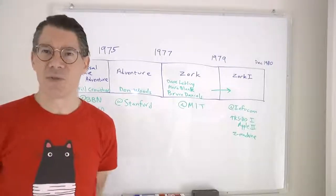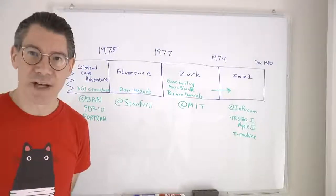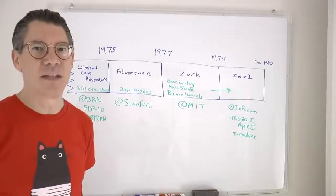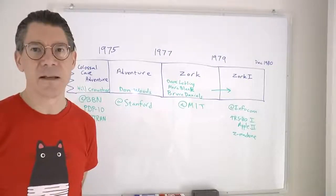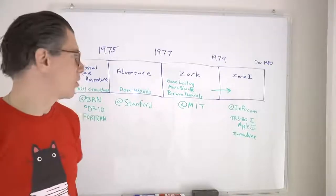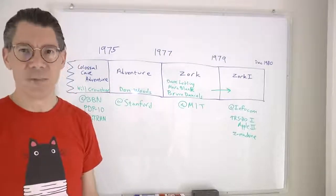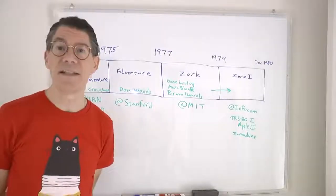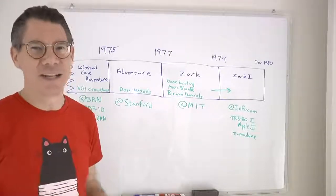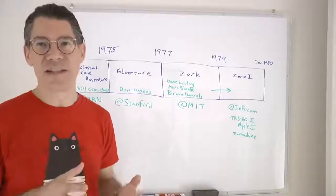It ran on a PDP-10, which was a mini-computer of that time, and it was written in Fortran. It was essentially complete in 1975, and at that point it made its way to Stanford University, where it caught the attention of Don Woods, who decided to dig into the program and add some more fantasy elements. He just called it Adventure, completed it in 1977, and then released the game and its source code on ARPANET, which at that time connected mainly universities and defense contractors.